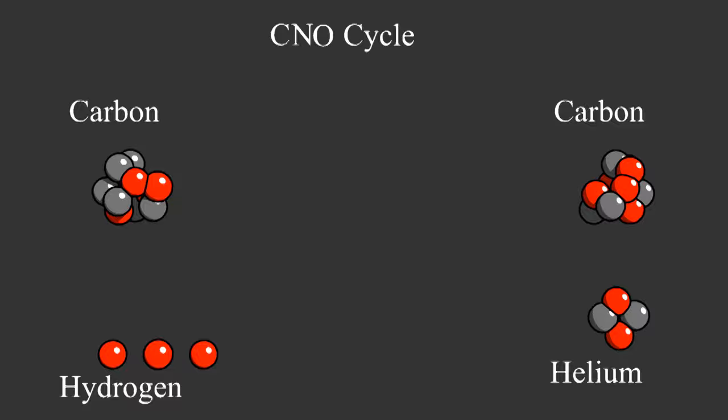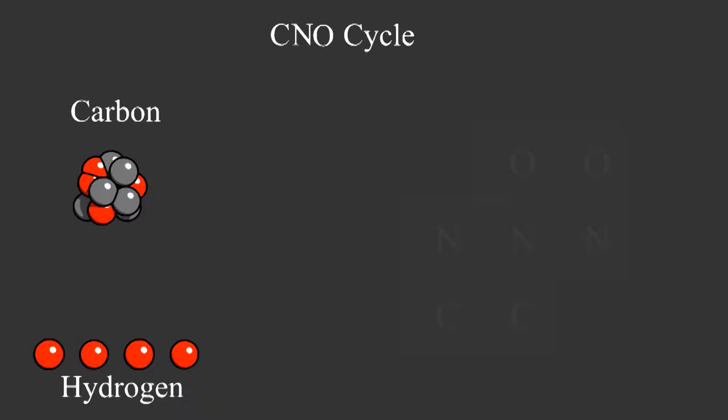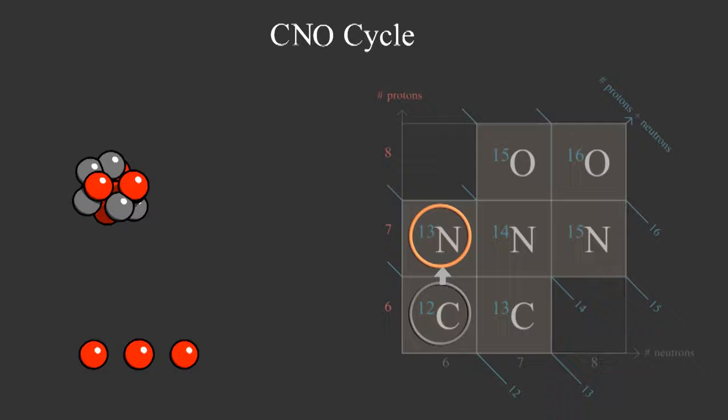The carbon here is acting as a catalyst. It helps make the reaction happen, but it's not consumed in the reaction. This gets a little complicated. We start with carbon-12. We add a proton to make nitrogen-13. Then the nitrogen beta decays. A proton decays into a neutron, turning nitrogen-13 into carbon-13.